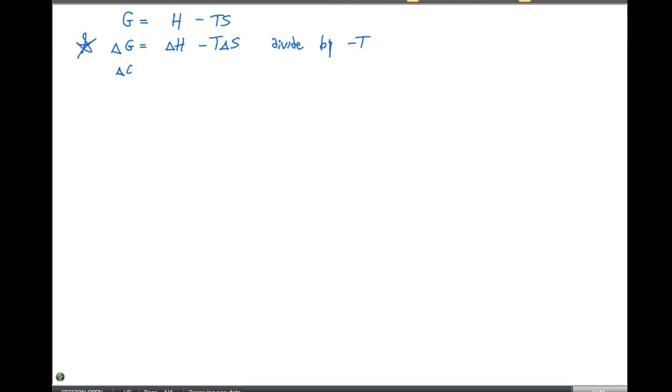When we do that, we get delta G, or minus delta G divided by T, equals minus delta H divided by T plus delta S. And this delta S is gonna be the delta S of our system.